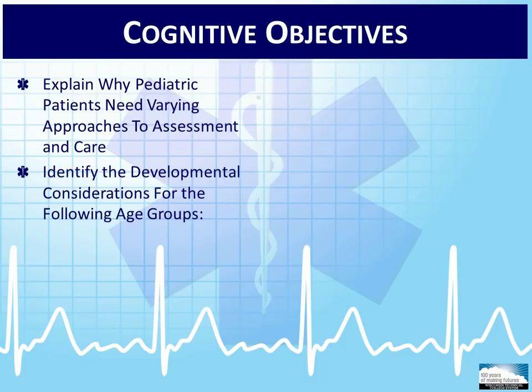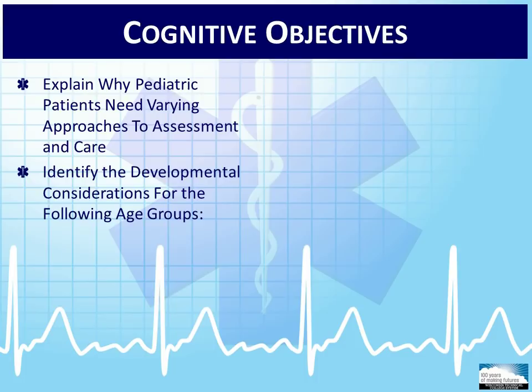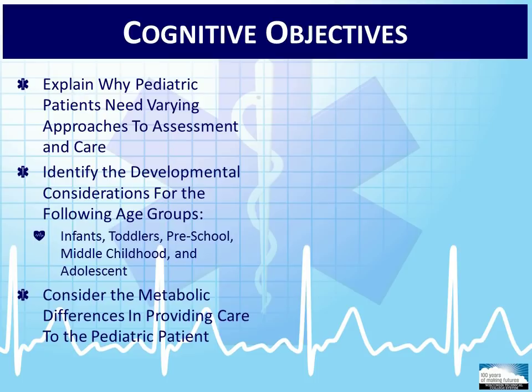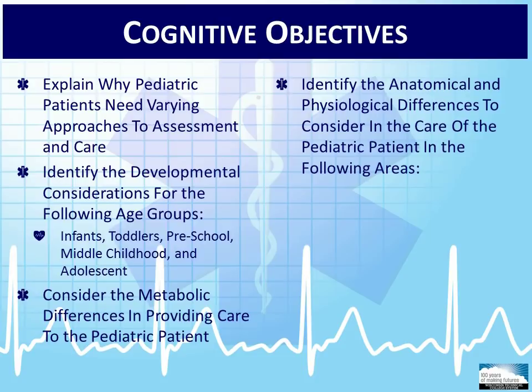Identify the developmental considerations for the following age groups: infants, toddlers, preschool, middle childhood, and adolescent. Consider the metabolic differences in providing care to the pediatric patient. Identify the anatomical and physiological differences in the following areas: head, airway, chest, lung, abdomen, extremities, integumentary system, respiratory system, circulatory system, nervous system, and spinal column.